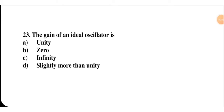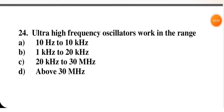Gain of an ideal oscillator is — unity, zero, infinite, or slightly more than unity? If it is an ideal oscillator, the gain should be infinite. So option C is the right option.